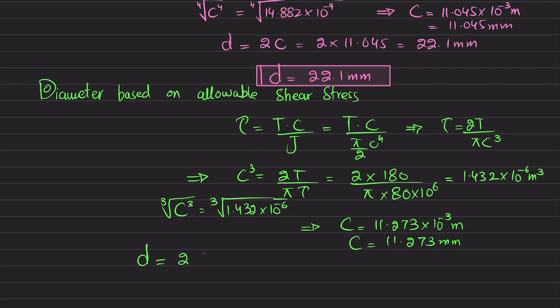Since we are interested to find the diameter, diameter is two times radius. So 2 multiplied by 11.273 equals 22.5 millimeters. This is the diameter based on allowable shear stress.